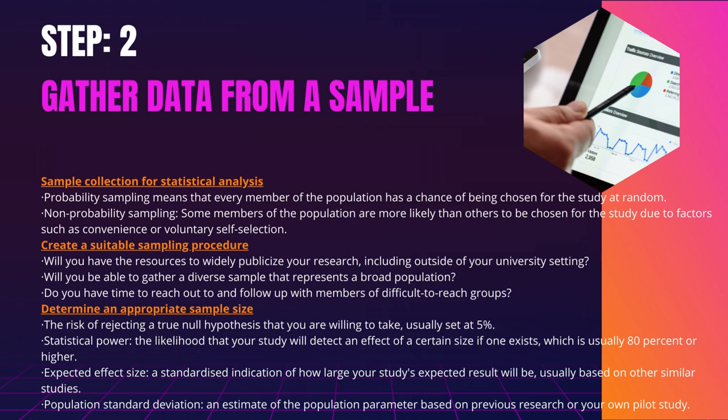Sample collection for statistical analysis. There are two methods for selecting a sample. Probability sampling means that every member of the population has a chance of being chosen for the study at random. Non-probability sampling means some members of the population are more likely than others to be chosen due to factors such as convenience or voluntary self-selection. In theory, for highly generalizable results, you should use a probability sampling method. Random sampling reduces sampling bias and ensures that the data from your sample is representative of the population.